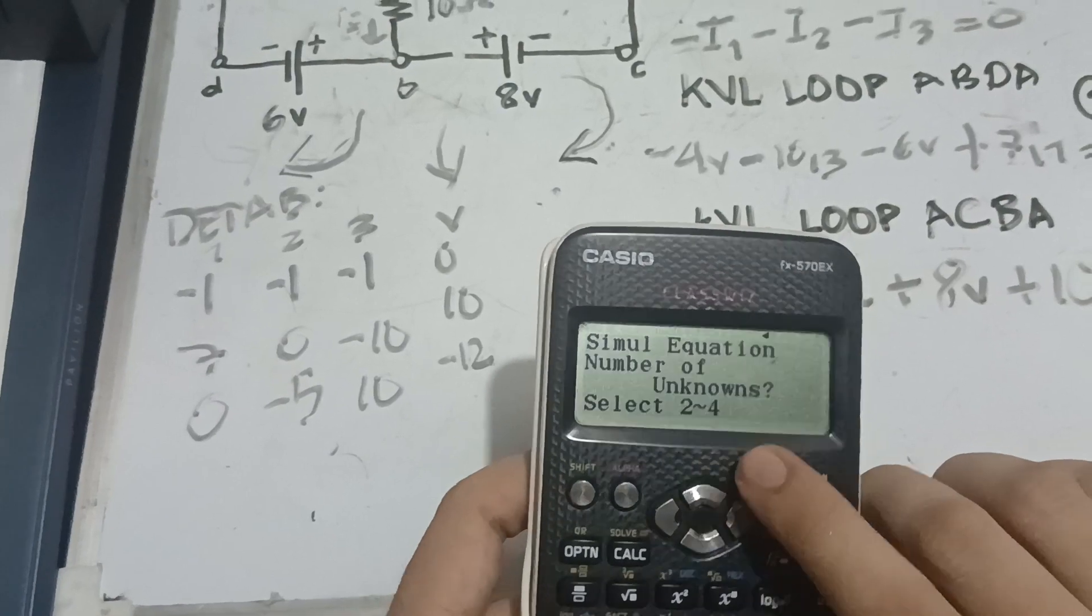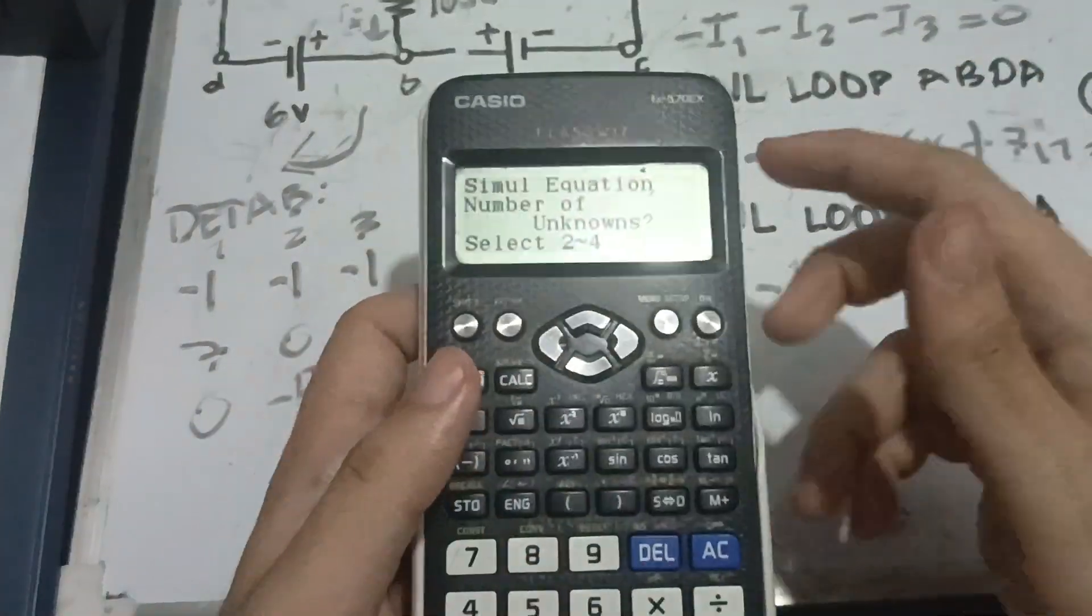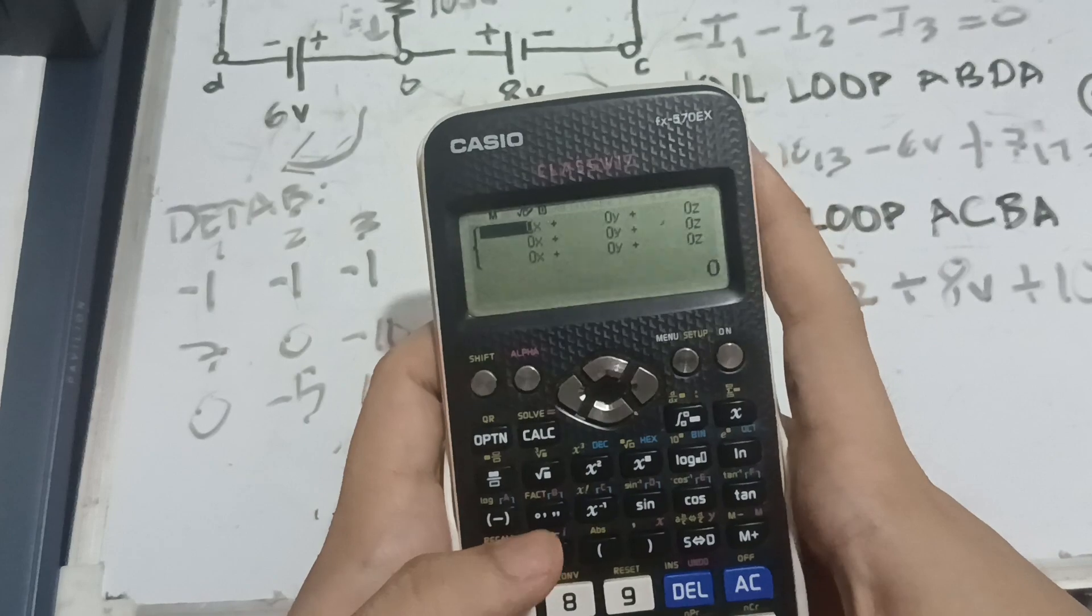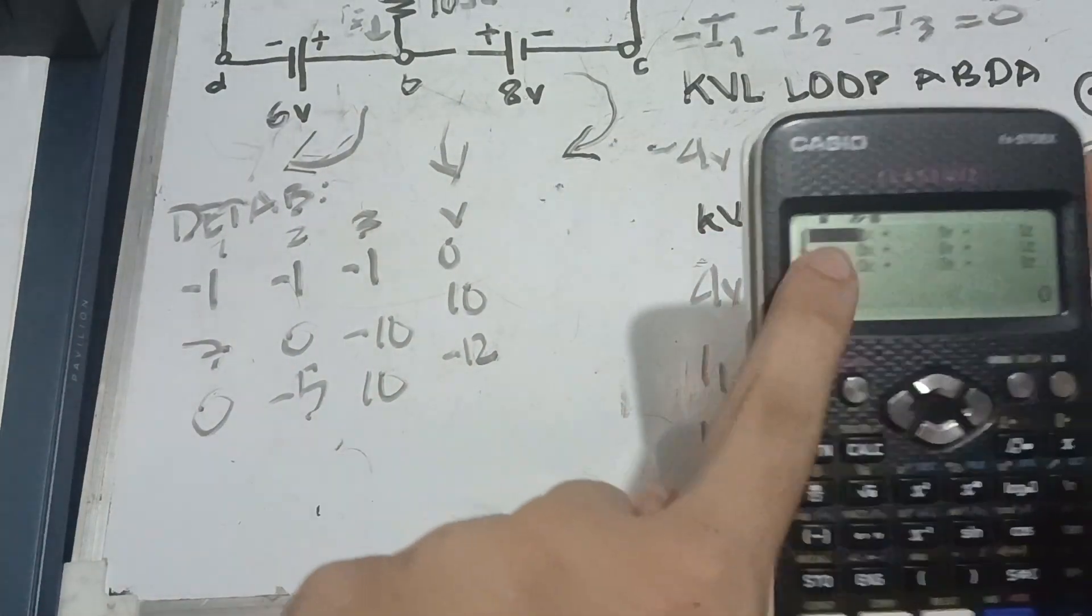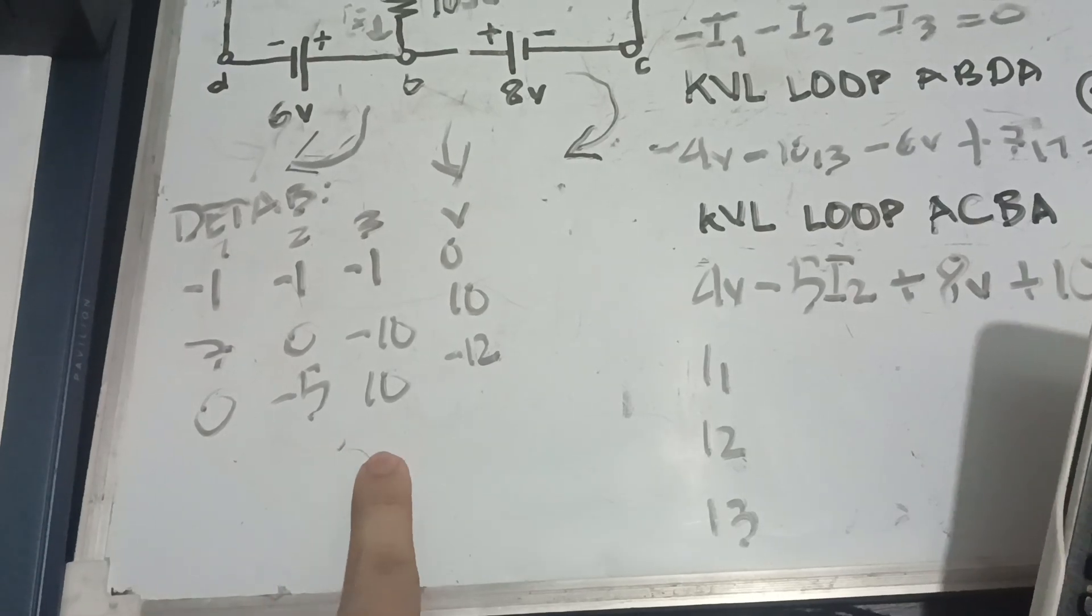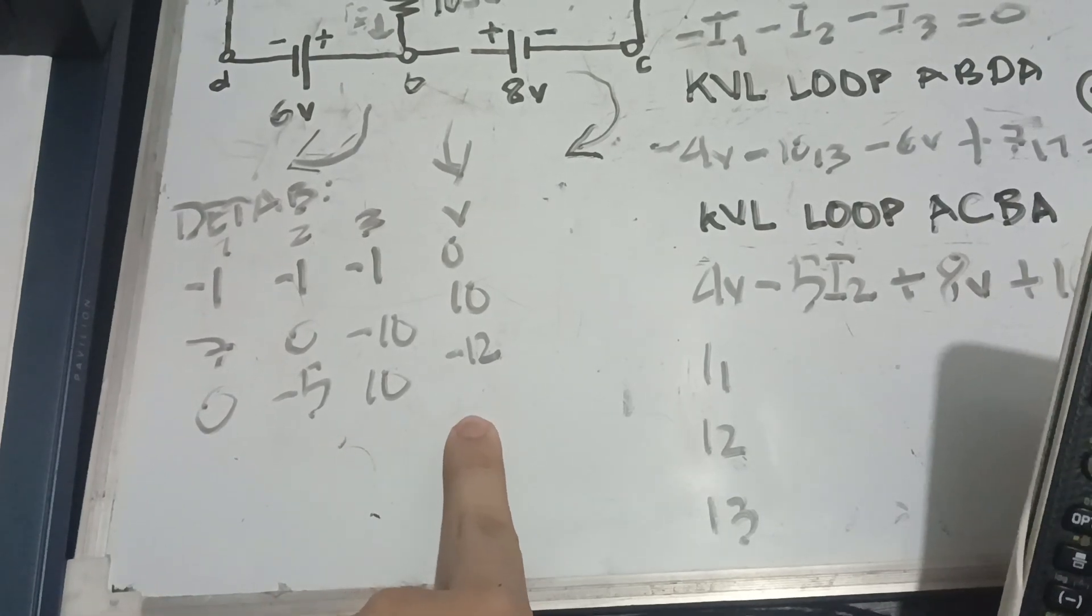Select number of unknowns. We are looking for I1, I2, and I3. So, it means we are looking for 3 unknowns. Just type it in. Then, we're going to just type this one on our calculator. So, this is the Xs, the Ys, and the Zs. And, this is the answer.